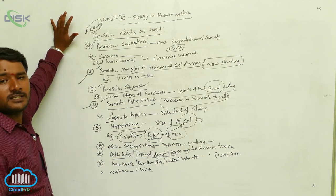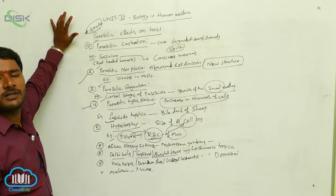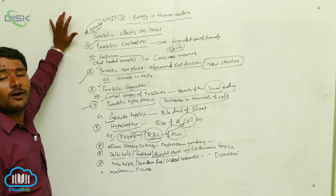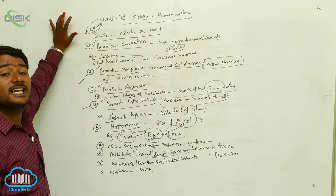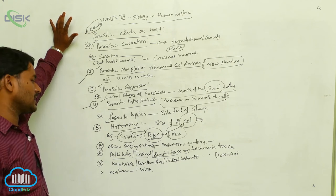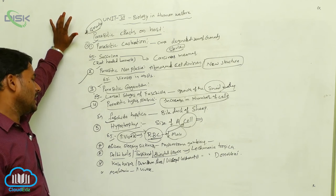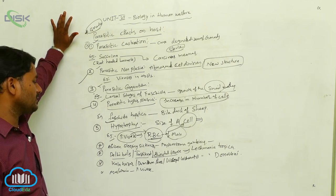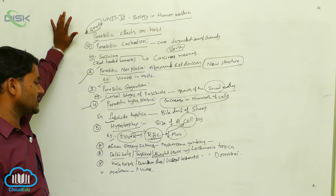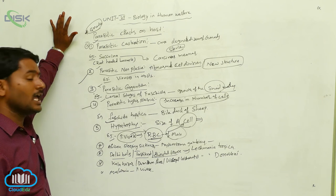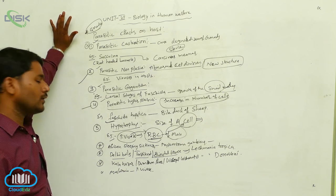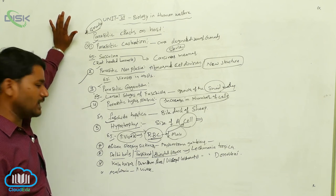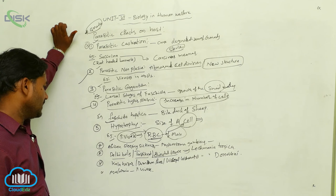Hypertrophy: some parasites cause an abnormal increase in the size of a single cell — this is called hypertrophy. For example, Plasmodium vivax causes an increase in the size of the RBC of man during its asexual life cycle.